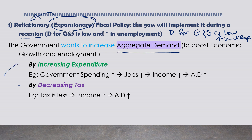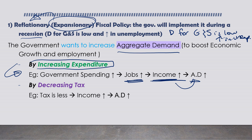When the government increases public spending or expenditure, it creates jobs, so people have more income and therefore demand more. If the government decreases taxes, people also have more disposable income and are therefore capable of demanding more. However, there is a risk that people may save this extra money or spend it on imported goods and services.